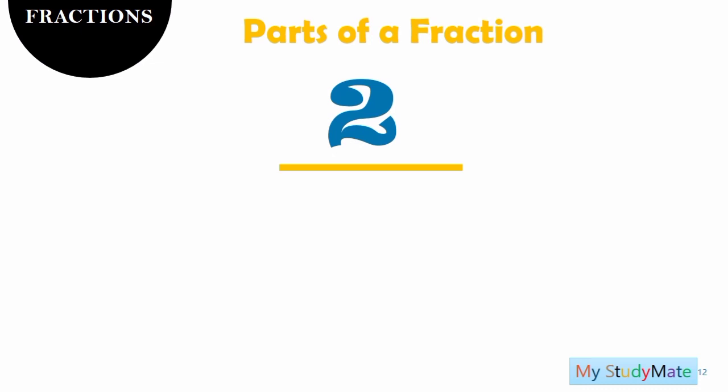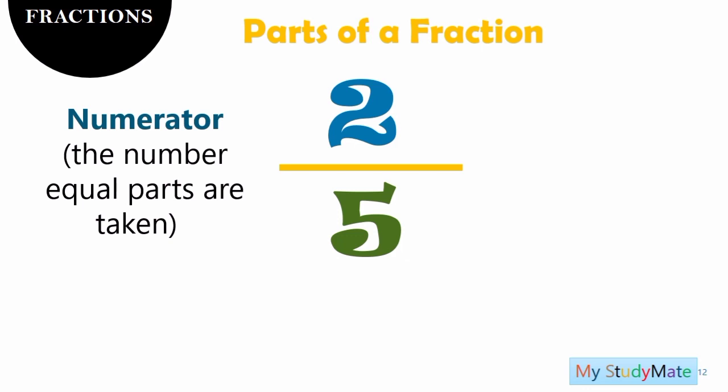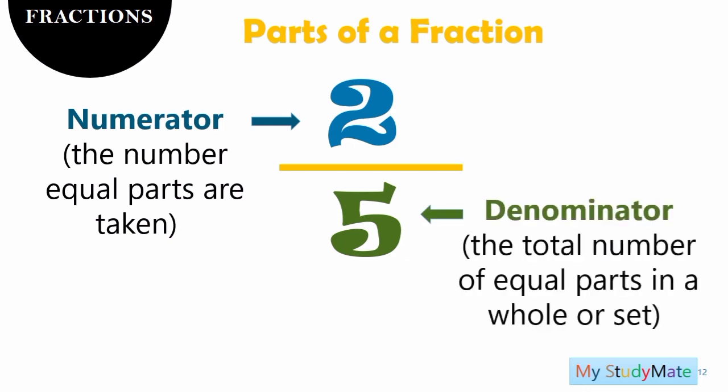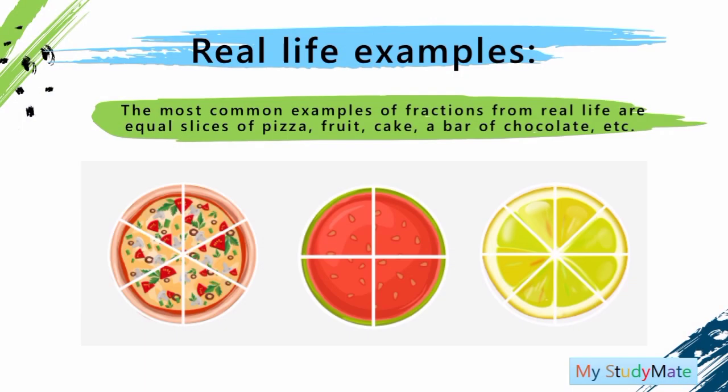Let us explain that further with an example. We have two fifths. The number two is what we call the numerator, or the number of equal parts taken. While the number five is what we call the denominator, or the total number of equal parts in a whole or a set. Can you see the fraction bar? What do you call the fraction bar? Some countries name it as a vinculum.